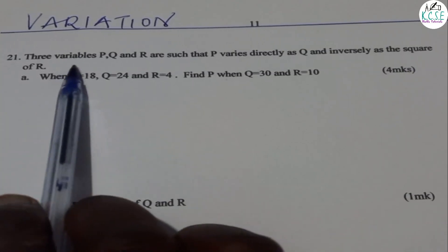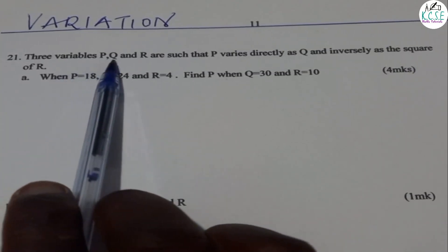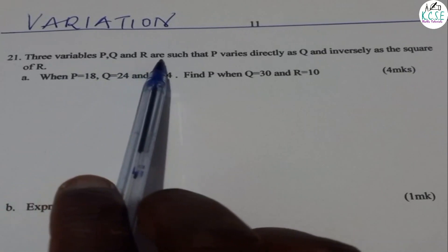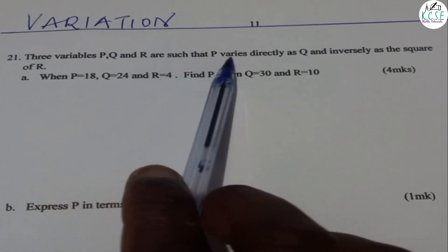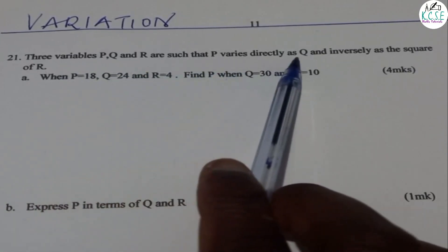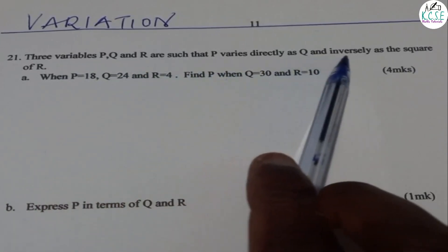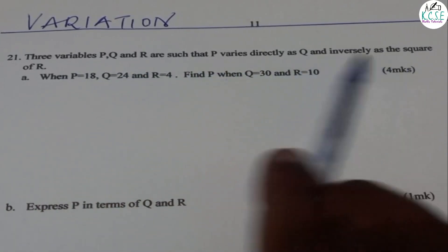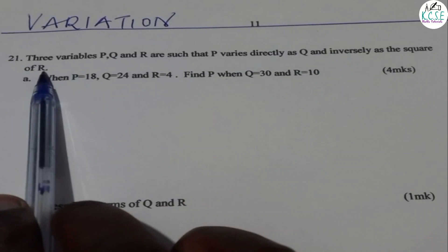Variation. Three variables P, Q, and R are such that P varies directly as Q and inversely as the square of R.